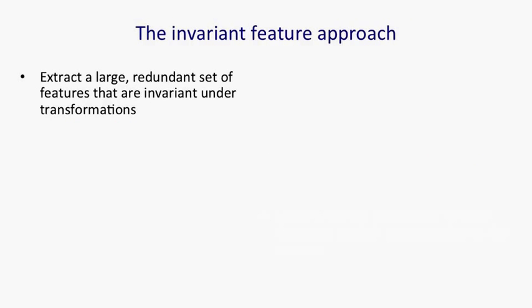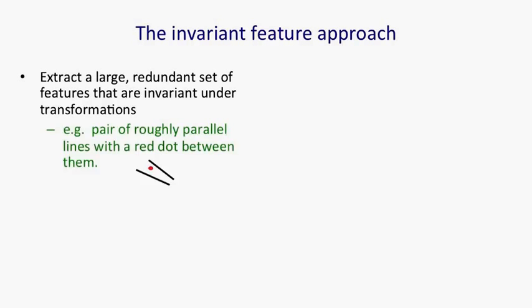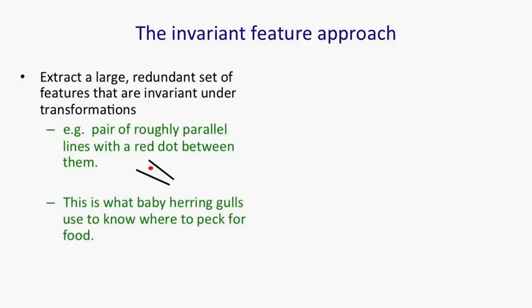So the invariant feature approach says you should extract a large and redundant set of features, and they should be features that are invariant under transformations like translation, rotation, and scaling. Here's an example of an invariant feature: a pair of roughly parallel lines with a red dot between them. That's actually been suggested as the feature that baby herring gulls use for knowing where to peck for food.